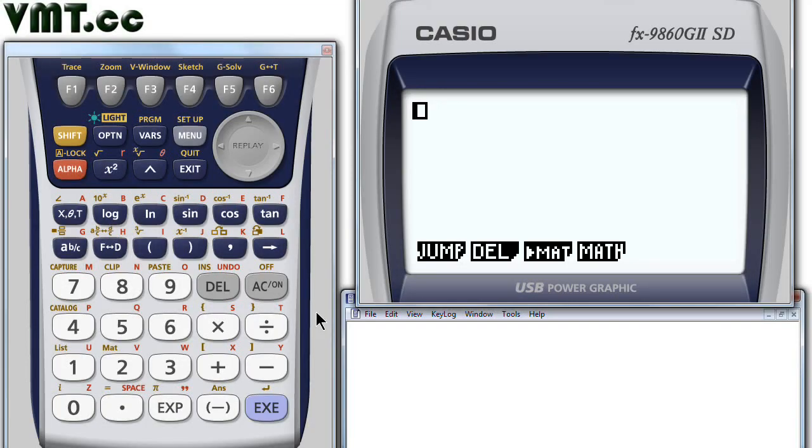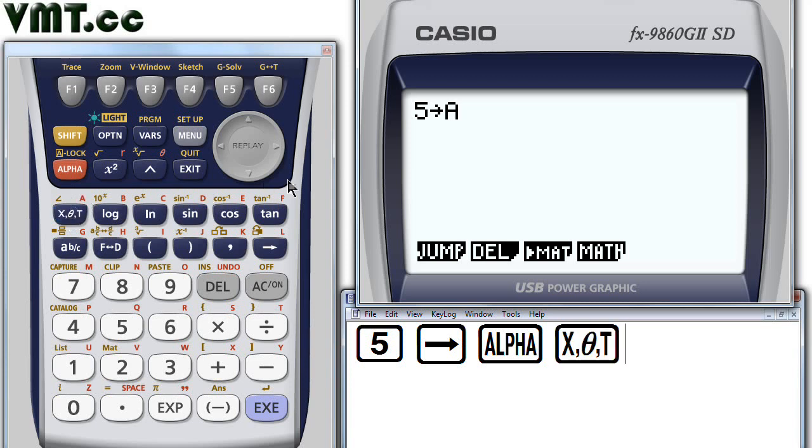First, let's store the value of 5 into variable a. Press 5, then store, alpha, and then the x, theta, t key, because there's a small red a just above it. Double check your display. Yep, looks good. So press execute. Notice the calculator displays the current value of variable a.